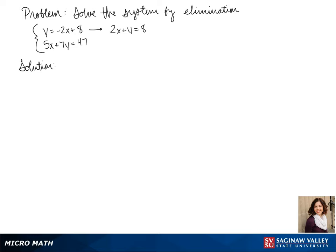Since one of our y's has a coefficient of 1, our y's would be easiest to cancel. So the coefficient that we want is positive or negative 7.